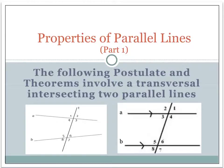We talked about the eight angles that are formed when that happens. What we're going to talk about today is we're going to assume that the two lines that the transversal is cutting are parallel. So we're going to be looking at examples like the second picture here, knowing that our lines are parallel, and we're going to see some interesting things happen with these eight angles.